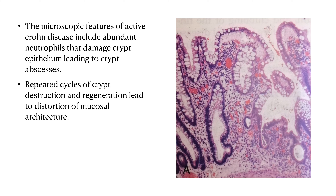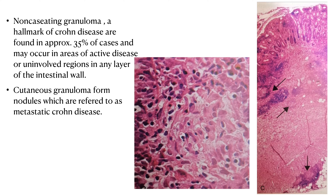Microscopic features of active Crohn's disease include abundant neutrophils that damage crypt epithelium, leading to crypt abscesses. Clusters of neutrophils within a crypt are referred to as crypt abscesses and are often associated with crypt destruction. Repeated cycles of crypt destruction and regeneration lead to distortion of mucosal architecture, and the normally straight parallel crypts take on bizarre branching shapes and unusual orientations, as seen in the histologic figure.